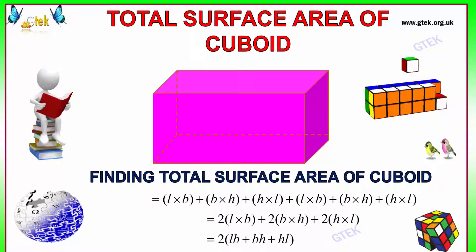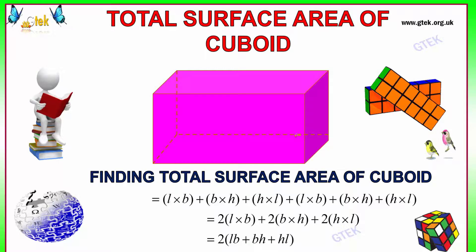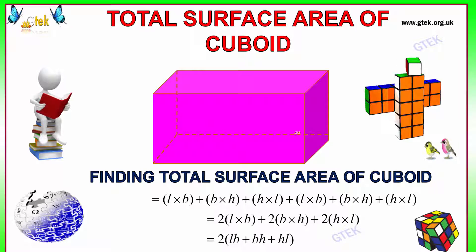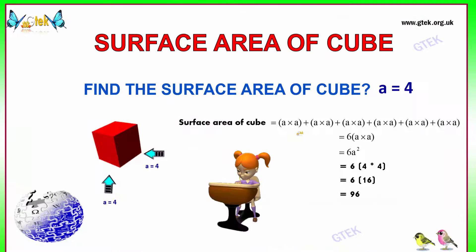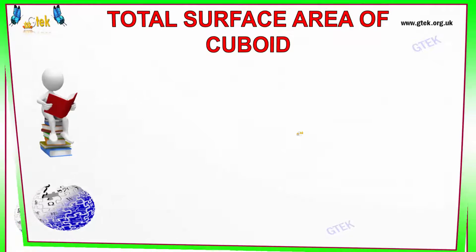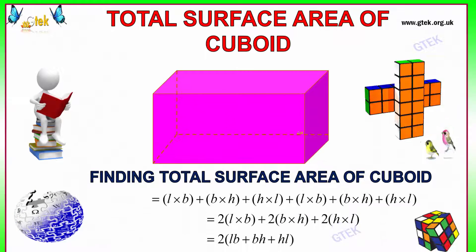Now we got an option of cuboid. Cuboid is nothing but the same cube, but the length, breadth, and height is different. Whereas for the cube, the length, width, and breadth of the object is same. If it is different, then it's referred to as cuboid.